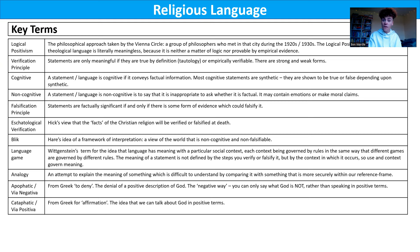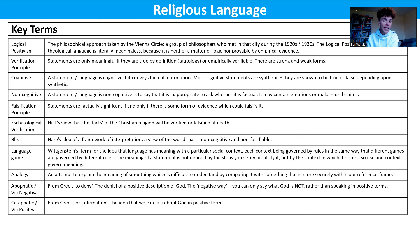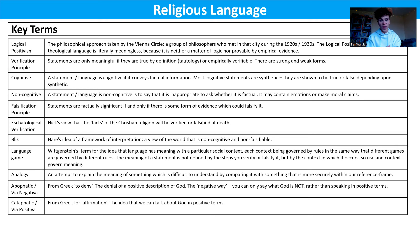The falsification principle seeks to establish whether a statement is meaningful, but it takes the opposite approach to verification. With the falsification principle, a statement is factually significant and meaningful if there is evidence which could falsify it — so it's about being prepared to say what would prove that statement wrong. The key criticism of religious language is that religious believers always seek to qualify their beliefs rather than falsify them — they move the goalposts. We're going to look at the parable of the gardener as we examine this today.